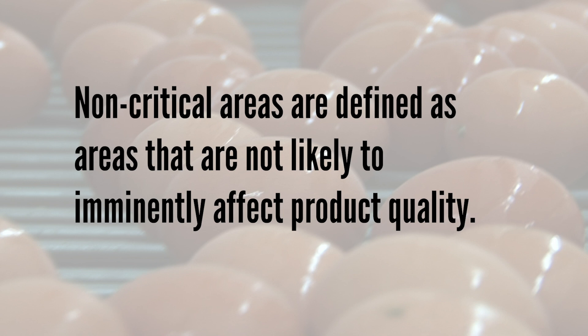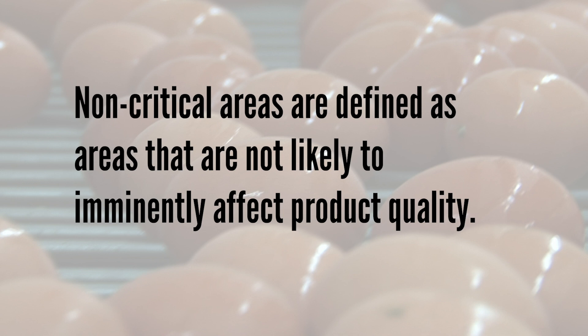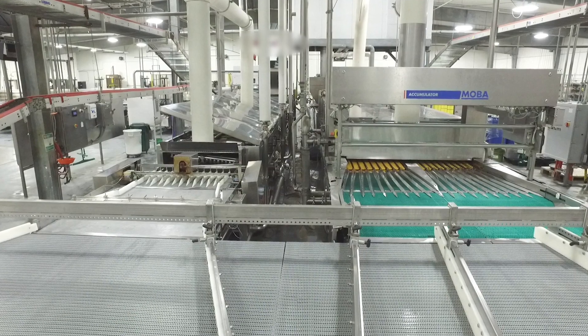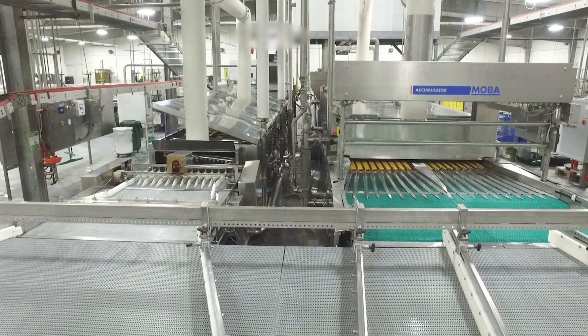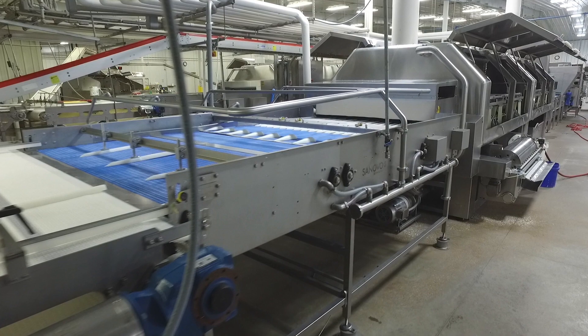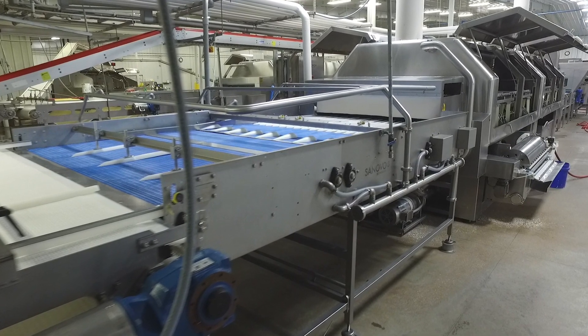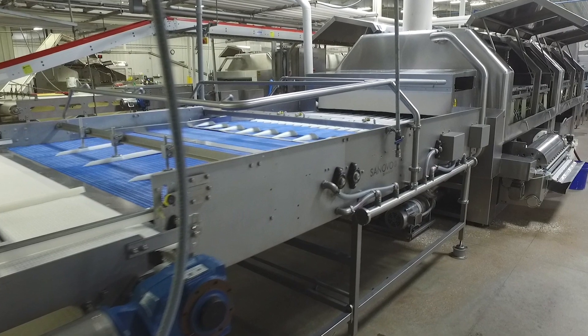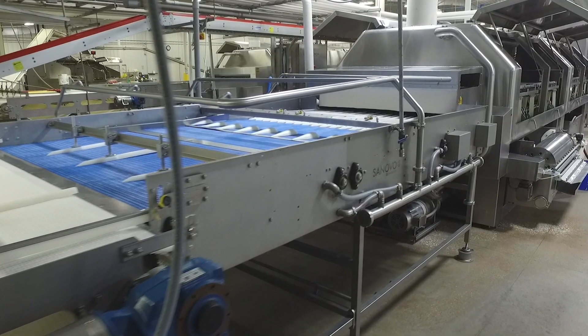Non-critical does not mean it is not important. Non-critical unsatisfactory conditions should be addressed after the processing line has been started, unless unable to safely do so during processing. In this module, the critical and non-critical areas of this piece of equipment will be identified and discussed. Additionally, examples will be used to illustrate the unsatisfactory and satisfactory condition of various components associated with the accumulator.